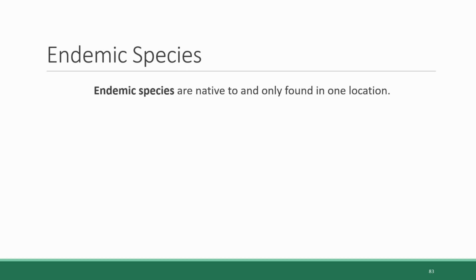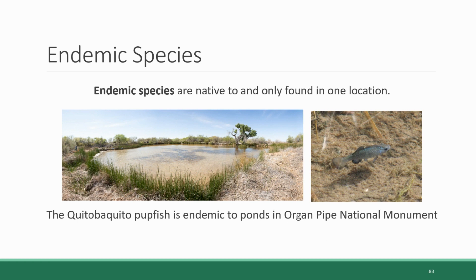One other feature of biodiversity in the tropics is that they have a higher number of endemic species. Endemic species are species that are native to and only found in one location. The area to which they are endemic can be very large or very small. For example, blue jays are endemic to North America — found pretty much anywhere east of the Rockies — but you won't find them on other continents. On the other hand, the Quitobaquito Desert Pupfish is endemic to just a few springs and ponds in Organ Pipe National Monument in southern Arizona, totaling an area of about four square miles. Unsurprisingly, the Quitobaquito Pupfish is considered endangered because it has such a restricted habitat and is highly vulnerable to extinction.